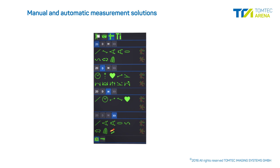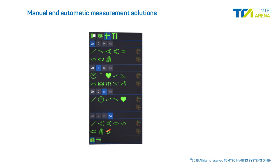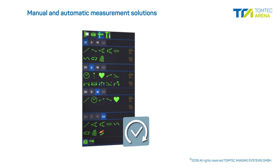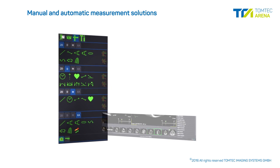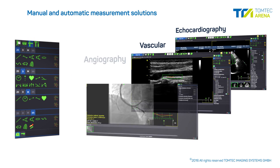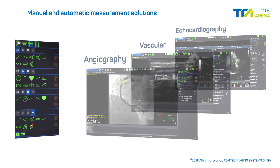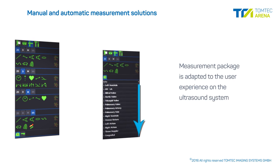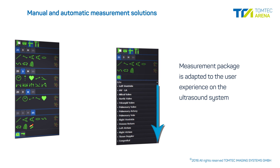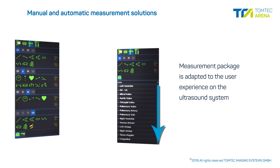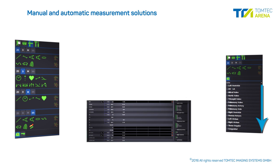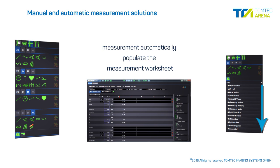The ImageCom measurement module provides manual and automatic measurement solutions for echocardiography, vascular, and angiography examinations. The workflow of the ImageCom measurement package is adapted to the user experience on the ultrasound system. Multiple measurements are supported, and measurements performed on the ultrasound system are automatically imported to populate the measurement worksheet.